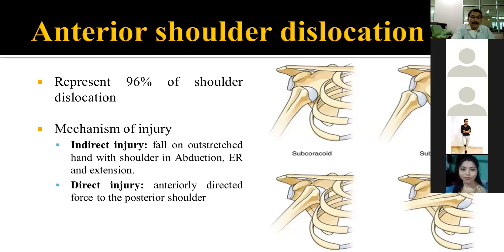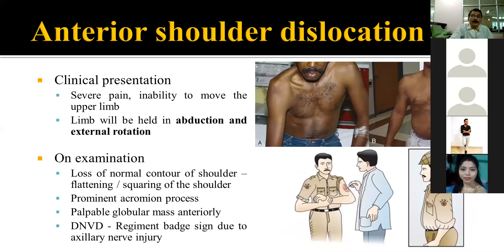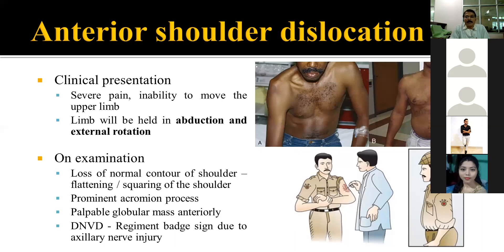Injury can be direct or indirect. Direct trauma from a force coming from the posterior side may also cause dislocation. When the patient comes to you, they will be crying with severe pain, holding the limb with the other hand for support. There is severe pain on any movement. On examination by inspection, the important finding is that the normal fullness of the shoulder joint is lost.